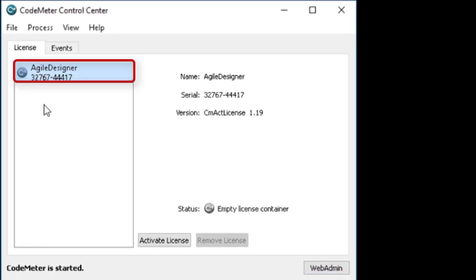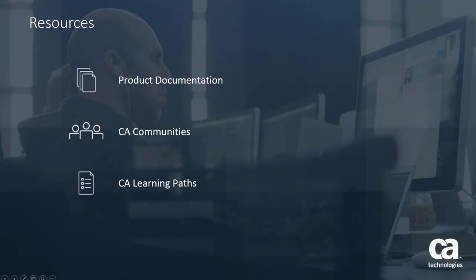After you have imported the license container, generate a license request file and send it to CA Support to receive your license file. For more detailed information about CA Agile Requirements Designer, visit the product page at ca.com. From there, you can view the product documentation, visit the CA Communities, or see the learning path for the product.